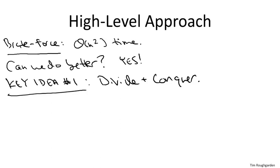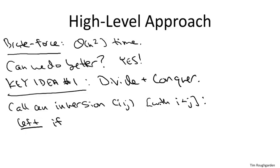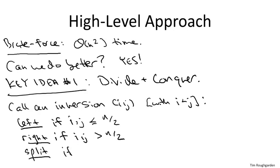To understand how much progress we can make purely using recursion, let's classify the inversions of array into one of three types. So suppose we have an inversion of an array, i, j. And remember, in an inversion you always have i less than j. We're going to call it a left inversion, if both of the array indices are at most n over two, where n is the array length. We're going to call it a right inversion, if they're both strictly greater than n over two. And we're going to call it a split inversion, if the smaller index is at most n over two and the larger index is bigger than n over two.